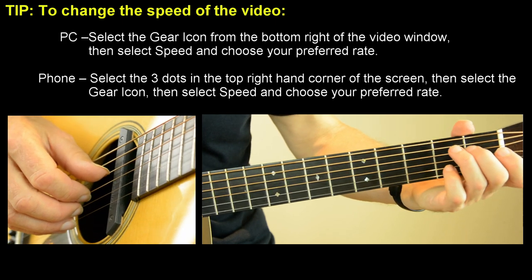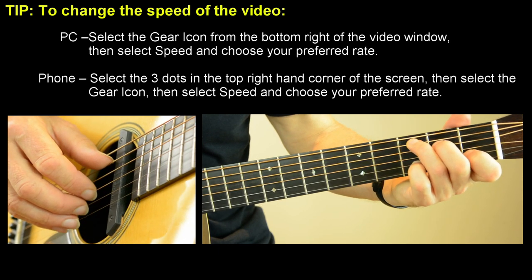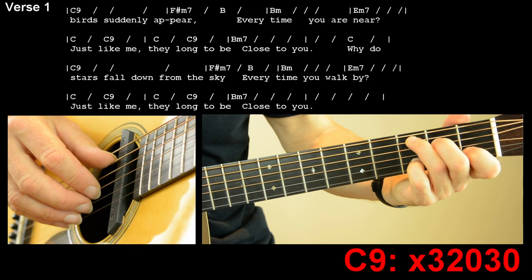So we've already got C9th I do. That was on the end of the introduction. So we're going to start from birds suddenly appear. And that sort of goes.